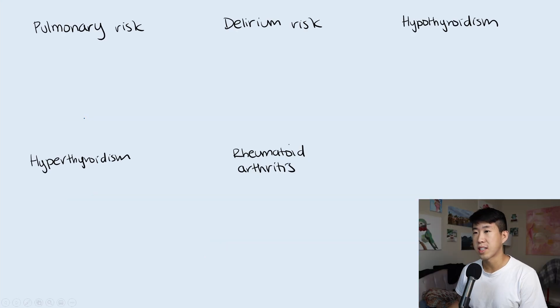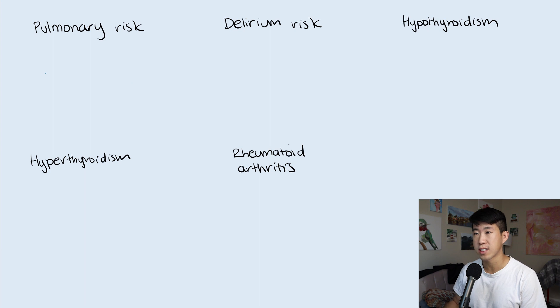Now for some miscellaneous topics: pulmonary risk, delirium risk, hypothyroidism, hyperthyroidism, and rheumatoid arthritis.